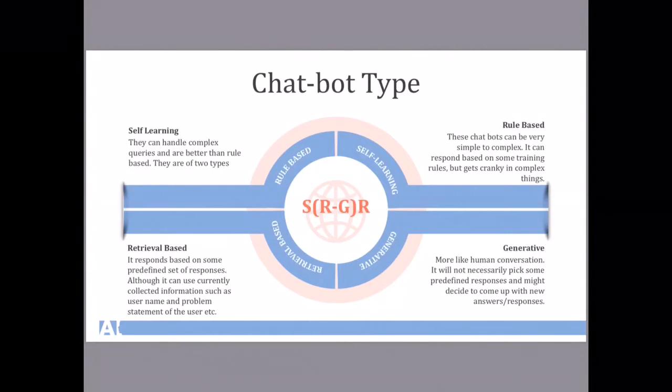And I think that is why we do machine learning in the first place - we don't want to follow some rule-based techniques, we want to generalize. That's where the other type of chatbots are in place which are called self-learning. They can handle complex queries and are much better than the rule based. Also self-learning can be of two types.